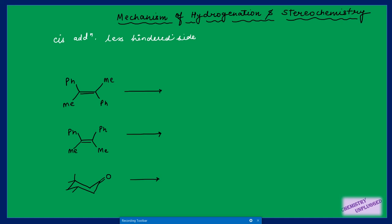Let's take some examples. Suppose we have an E-alkene. If we do its hydrogenation, two hydrogens add on the same side. The phenyl can come above the plane and methyl go below, or the phenyl can go below and methyl come above. These two possibilities give two products that are racemic to each other. So in case of E-alkene we get a racemic mixture.